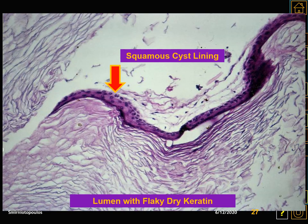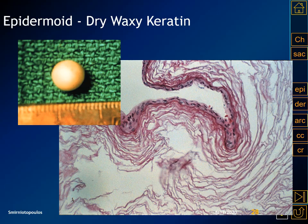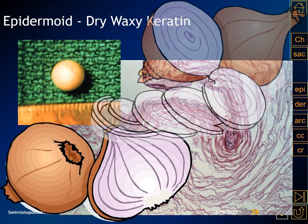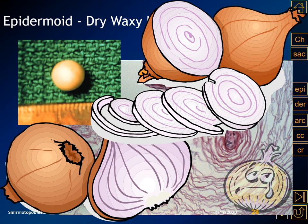Histologically, an epidermoid inclusion cyst has a squamous epithelial lining, and within the lumen we have dry, flaky, waxy keratin. The epidermoid pearl and the dry waxy keratin are the characteristics we look for. Think about all the layers of an onion — that's what you see in the layers of desquamated squamous epithelium becoming keratinized.